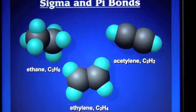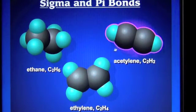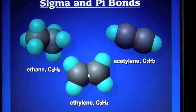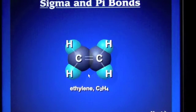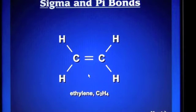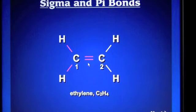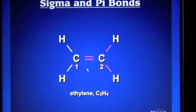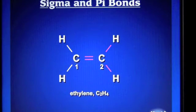Let's take a look at the bonding in ethylene. To understand the bonding in ethylene we're going to need to draw a Lewis structure. If we look at the Lewis structure for ethylene we're going to see that around each carbon there are only three areas of high electron density. In VSEPR theory a double bond counts as a single area of high electron density. So around carbon 1 and carbon 2 we have three areas of high electron density, which gives a trigonal planar geometry with bond angles at 120 degrees.